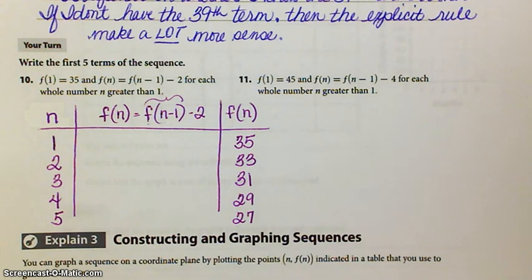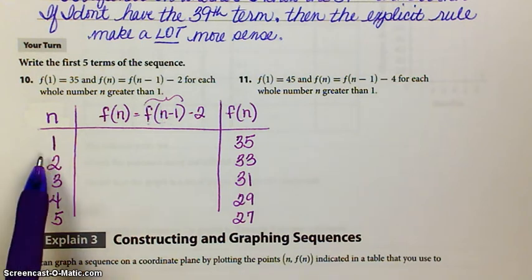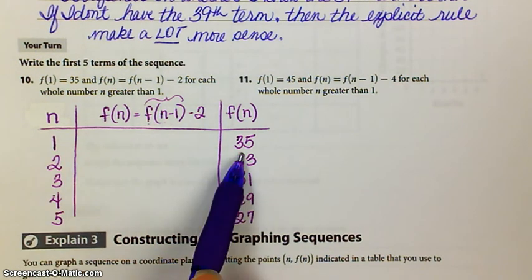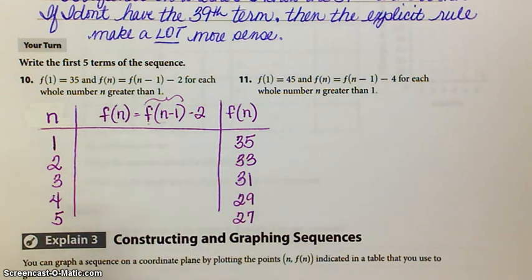Okay, I'm continuing on with Module 4, Lesson 1, and I'm on number 10. This is a recursive rule, and for a recursive rule, I always have to give you the first term. And remember, the terms are dependent on knowing the value of the previous term.